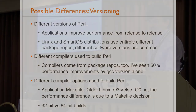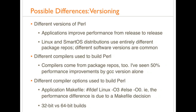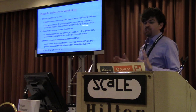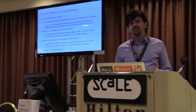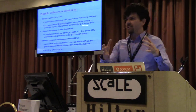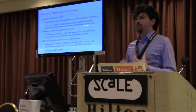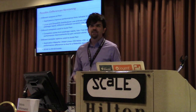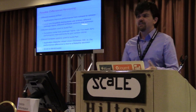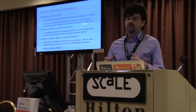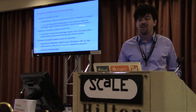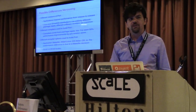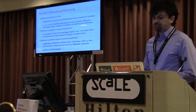How can this differ between systems? You could be running different versions of Perl — applications improve performance from release to release, and Linux and SmartOS distributions use entirely different package repos with different software versions. You may say that's not really the operating system or kernel, it's an externality — but when you're a customer trying FreeBSD, SmartOS, and Linux, you may think it's an actual system difference. So the package ecosystem matters.